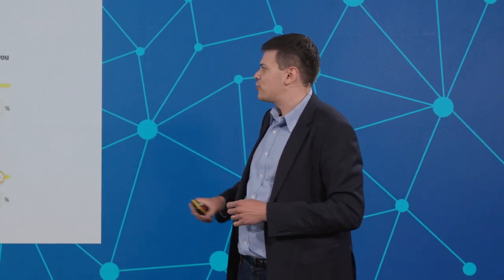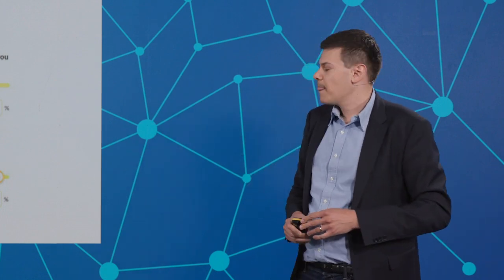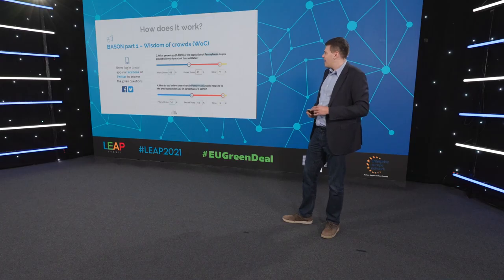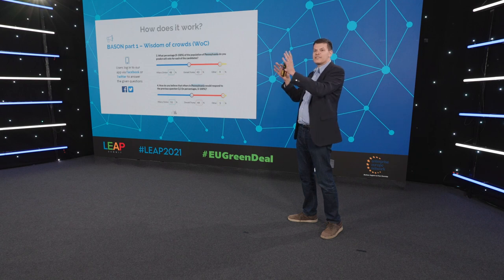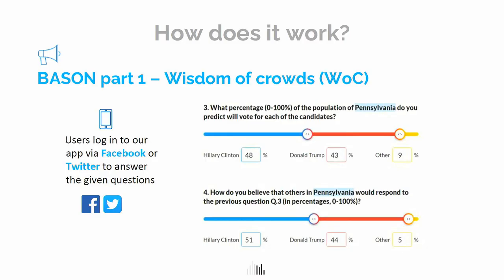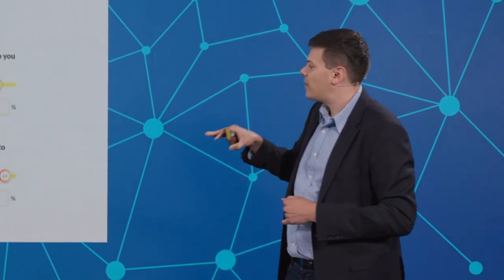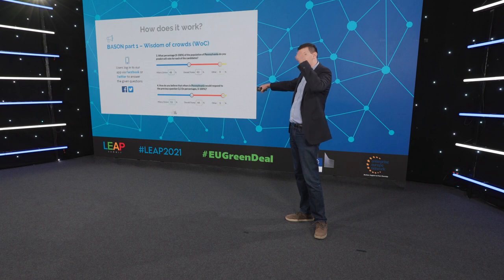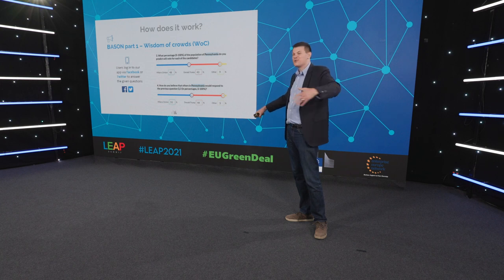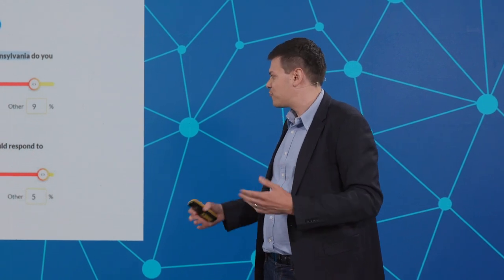These are the types of questions that they're answering. This is what we had in our first survey, one of the first ones that we did for the Trump versus Hillary elections in 2016 in America. We were asking them what percentage of the population of Pennsylvania, for example, is going to vote for your candidate. People use sliders to give their idea of who's going to win. But then we ask them: how do you believe others in Pennsylvania would respond to the previous question? We did this experimentally — with students asking about test scores, with political candidates, and many different ways of trying to figure it out.